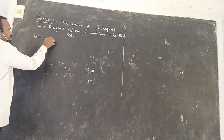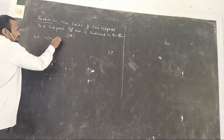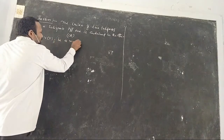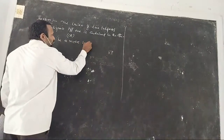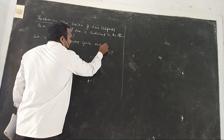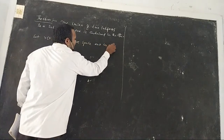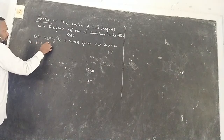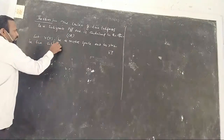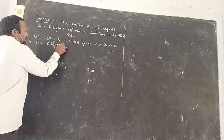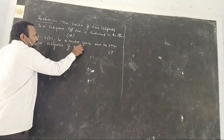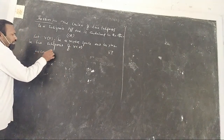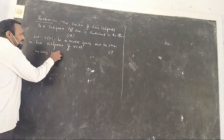Let V be a vector space. And W1 and W2 will be subspaces. W1 and W2 are subspaces of V.